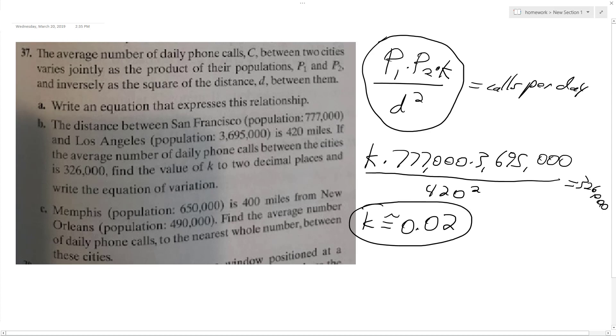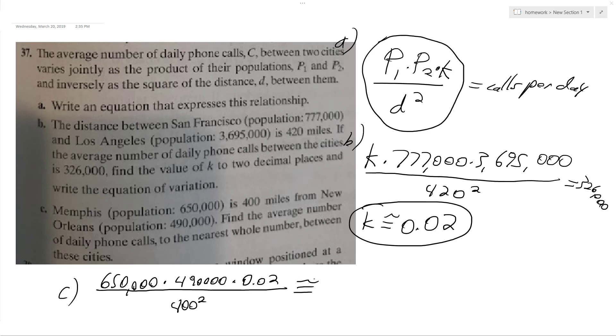So Memphis, population, okay, so calls per day, this is part C. So Memphis 650,000 and then New Orleans 490,000 times k is 0.02, all over 400 squared. And we get approximately 339,812.5, or round up to 398,013 calls.